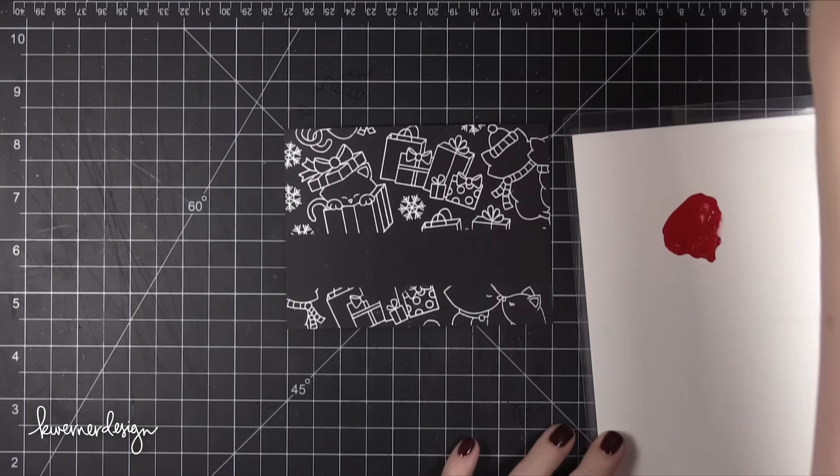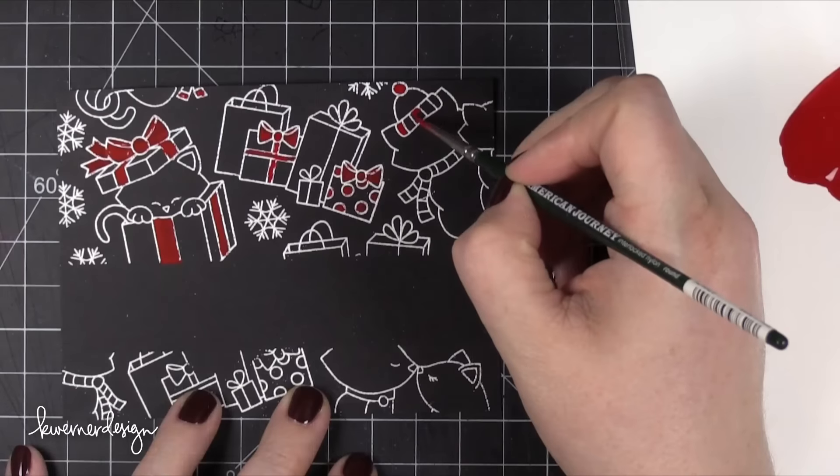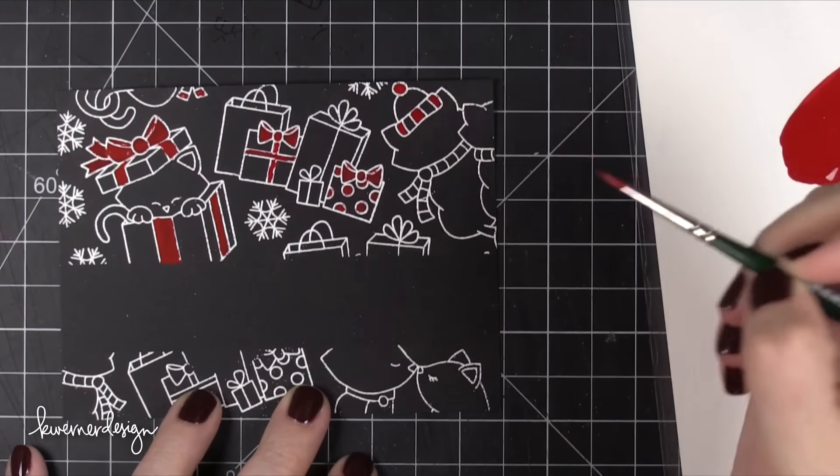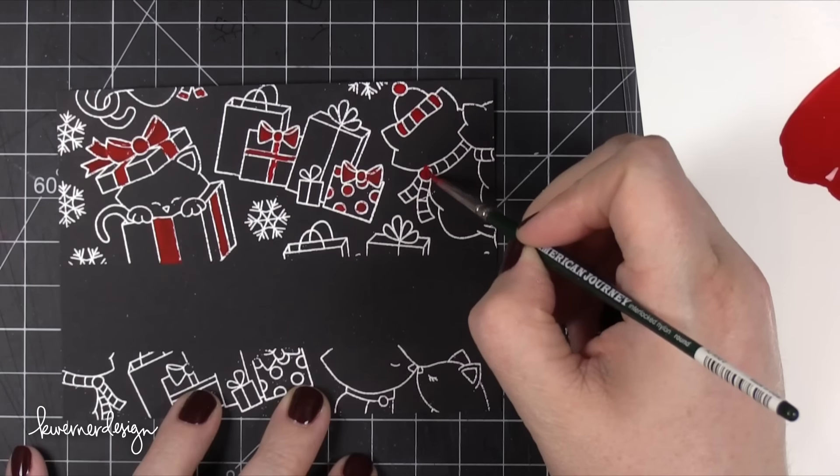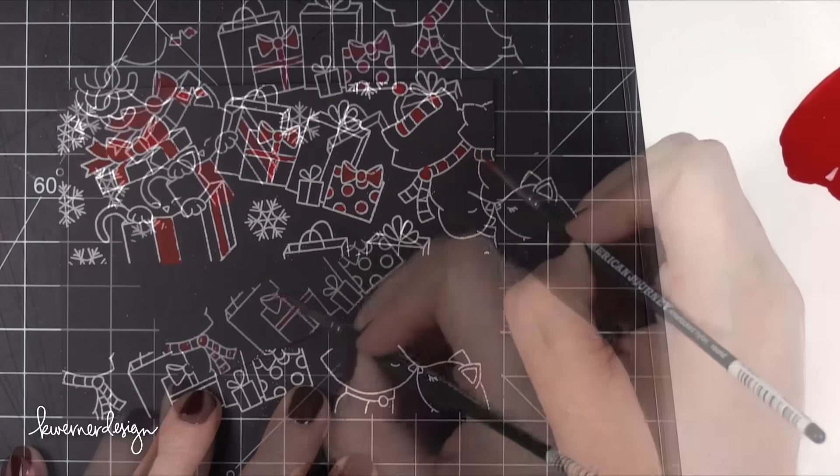Then as I add it to my project it's going to be opaque. It's not going to let any of that black card stock show through. So I'm just painting over some select areas in the images. I'm hitting the bows and some polka dots and the scarves on the cats. I just wanted to fill in some little areas.